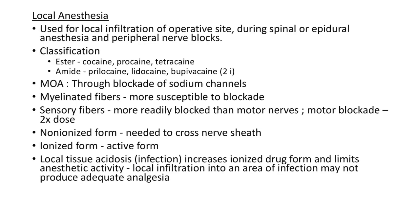Now let us see about local anesthetics. Local anesthesia is used for local infiltration of the operative site, during spinal or epidural anesthesia, and for peripheral nerve blocks. Local anesthetics are classified into esters and amides. Esters have a single 'i' in their name; amides have two 'i's. Examples for esters include cocaine, procaine, and tetracaine. Examples for amides include prilocaine, lidocaine, and bupivacaine.